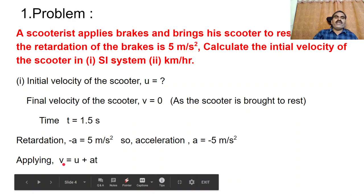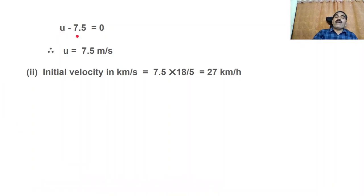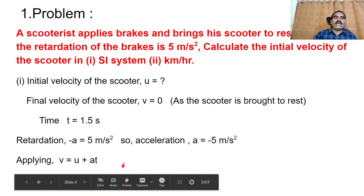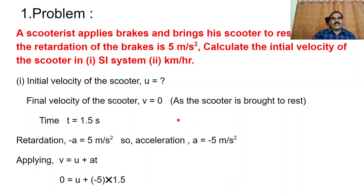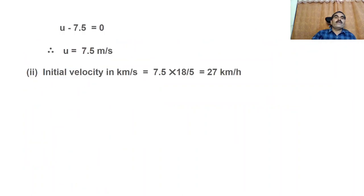Now apply the equation V equals U plus AT. V is 0, U is unknown, A is minus 5 meters per second square, T is 1.5 seconds. So 0 equals U plus (minus 5) into 1.5. That gives 0 equals U minus 7.5. Therefore, U equals 7.5 meters per second.